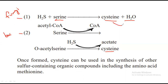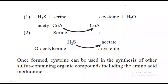After cysteine is formed, it can give rise to methionine. Keep in mind that H2S is used here, not SO4 or SO3. First the SO4 present in the atmosphere is converted into H2S, and then it is incorporated into the amino acid backbone. Once cysteine is formed, it can be used in the synthesis of other sulfur-containing organic compounds, including the amino acid methionine.